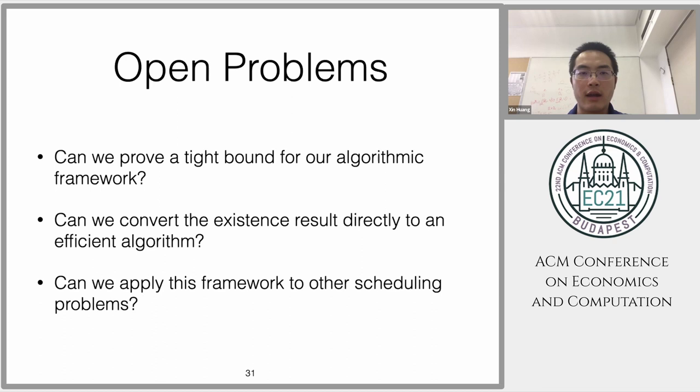Lastly, let me introduce some open problems. We have a gap between 11/9 and 20/17. Can we prove a tight bound for this framework? Can we convert the existence result directly to an efficient algorithm? We showed how to do it for 5/4 approximation—is it possible that we can do it for 11/9? Job scheduling is a special case of chore allocation, so it's natural to ask: is it possible we can apply this framework to other scheduling problems?